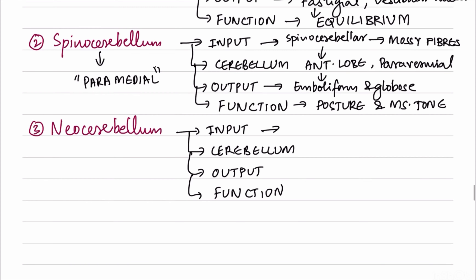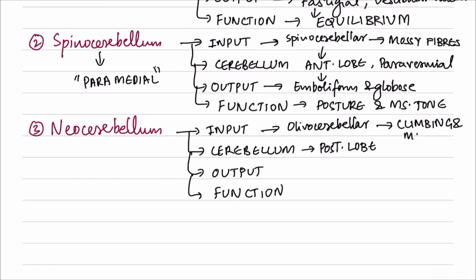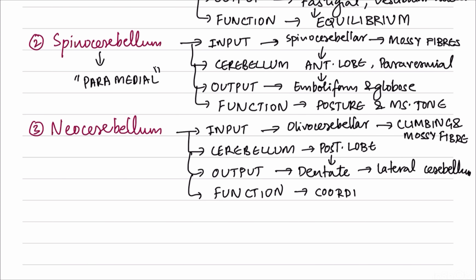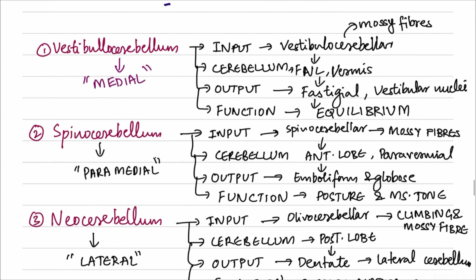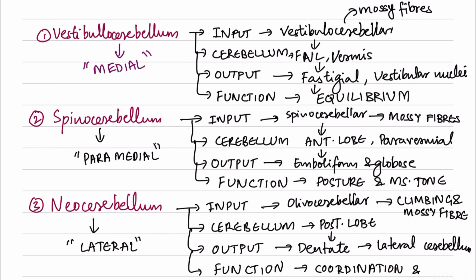Finally, the neocerebellum receives input from various sources including olivocerebellar fibers, spinocerebellar fibers, and others, involving both climbing fibers and mossy fibers. Inside the cerebellum it involves most parts of the posterior lobe. The output is through the dentate nucleus, associated with the lateral cerebellum. The function is coordination of movements and planning of highly skilled movements. The neocerebellum is mostly concerned with the lateral part of cerebellum.